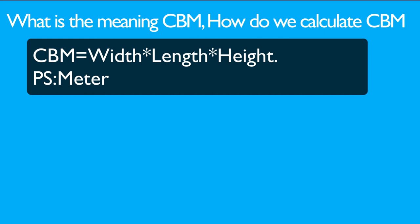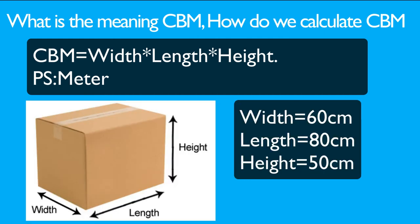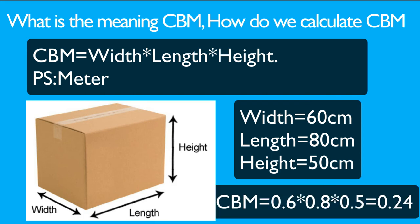Let me give you an example. We use this box as an example. As you can see, the width of the box is 16 cm, the length is 18 cm, and the height is 15 cm. Note that 1 meter equals 100 centimeters. To get the CBM, we use width times length times height: 0.6 times 0.8 times 0.5, which gives us 0.24. So the CBM of the box is 0.24.